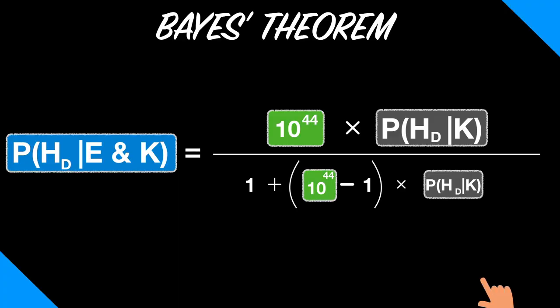We just need to figure out the value of this last term. It's called the prior probability of our hypothesis, H, D. Different people will have different estimates of the prior probability of a universe designer. If you have a strong intuitive sense of the existence of God, and you don't find arguments against him very compelling, then you'll think the prior probability is high. If you lack an intuitive sense of God, and you find arguments against him pretty compelling, then your prior probability is going to be low.